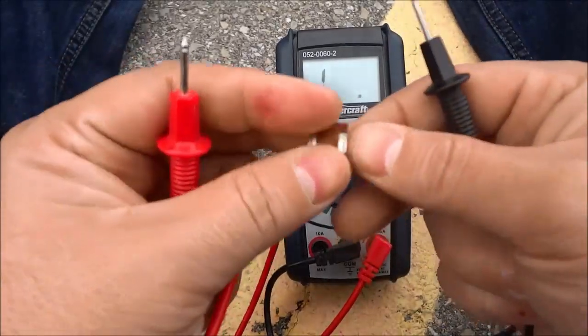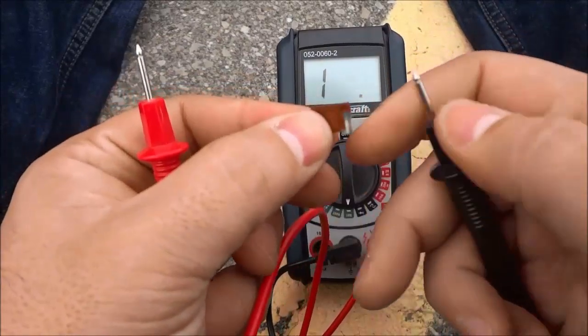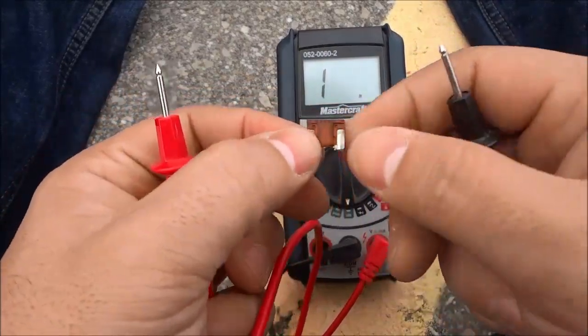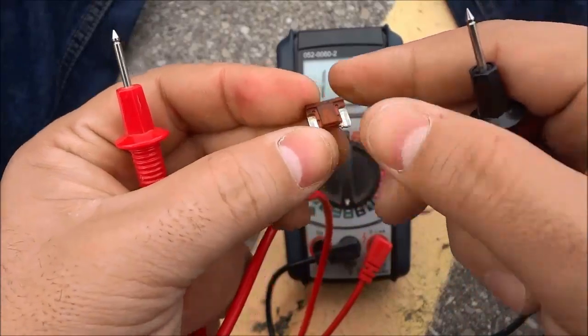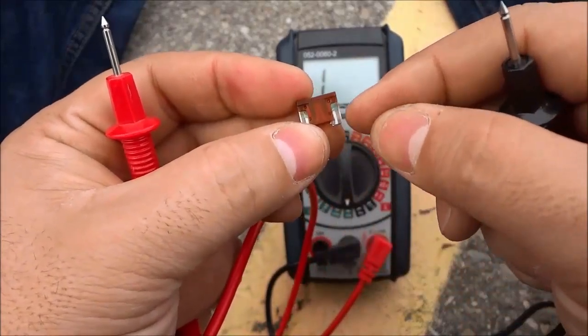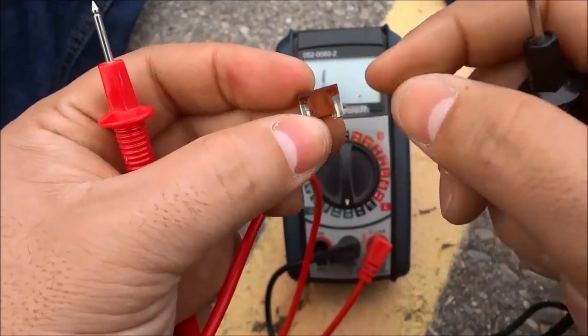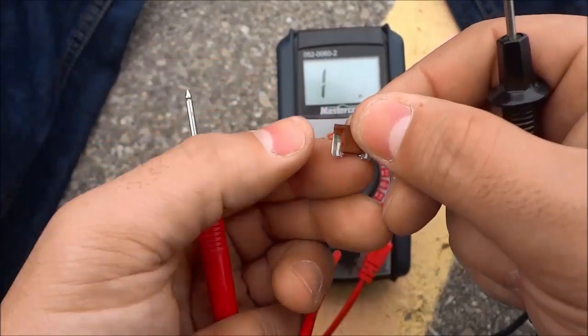Now I'm going to take the car fuse and I'm going to touch each of the terminals to each of the sides of the car fuse. One terminal will be touching the right side right here of this metal part and the other terminal will be touching the left side.